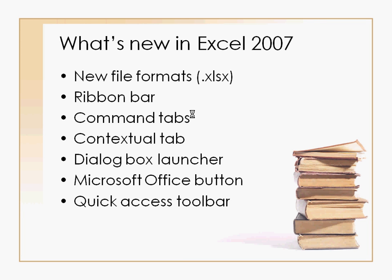One big change in Excel 2007 is the new file format. The file format has changed from .xls to .xlsx, and in fact most programs in the Office 2007 software package have these new file formats as well. This new file format has several advantages: the file size is smaller, it's easier to recover your work if the program crashes, and it's easier to integrate outside data into your file. However, there can be a problem if you take your new Excel 2007 file and try to work on it in earlier versions of Excel. There are two solutions: one is to install the Microsoft Office compatibility pack for 2007 Office on the computer with the earlier version of Excel. But an easier way is to save the Excel 2007 file in the earlier format so that it's compatible with older software versions. However, this will eliminate some of the special features of the Excel 2007 file, so you'll have to consider that when making that change.